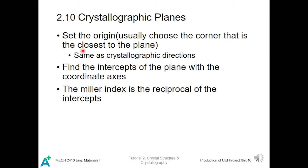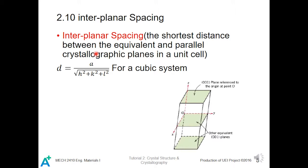To draw crystallographic planes, we first set the origin, usually choosing the corner closest to the plane — the method of setting the origin is the same as for crystallographic directions. Then we find the intercepts of the plane with the coordinate axes. We also define the interplanar spacing, which is the shortest distance between equivalent parallel crystallographic planes. In a unit cell, d equals a over the square root of h² + k² + l², for a cubic system.